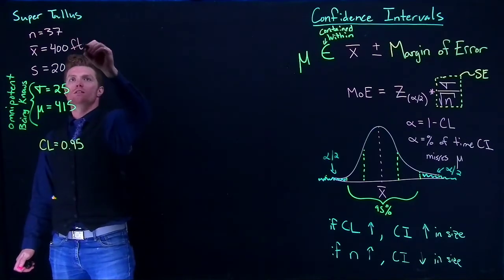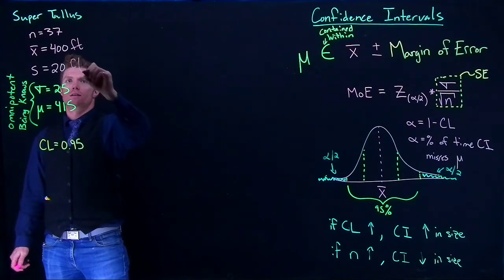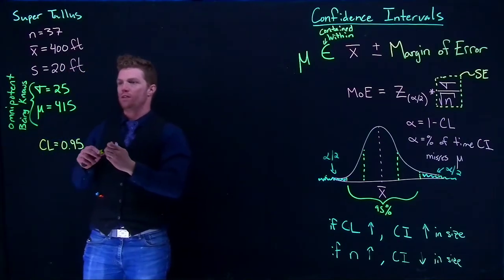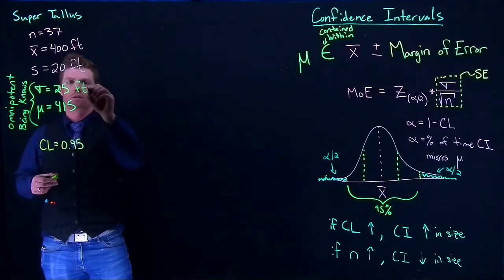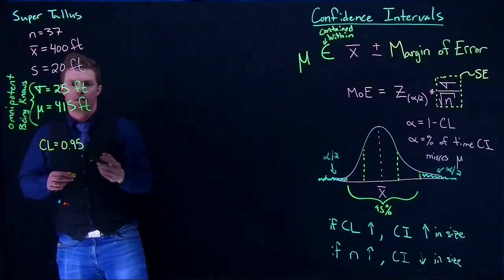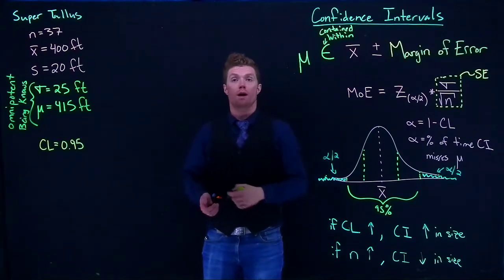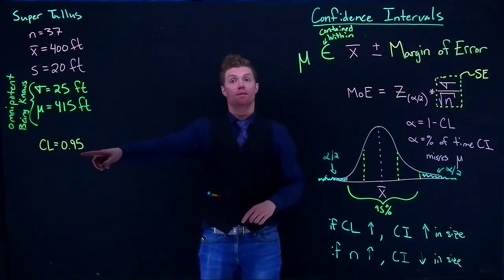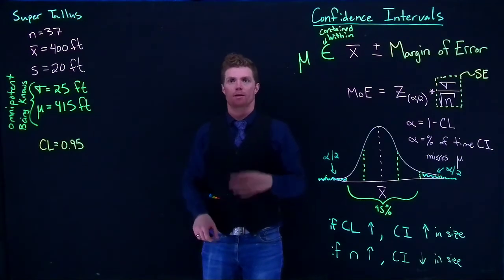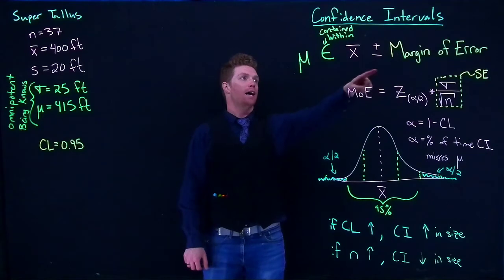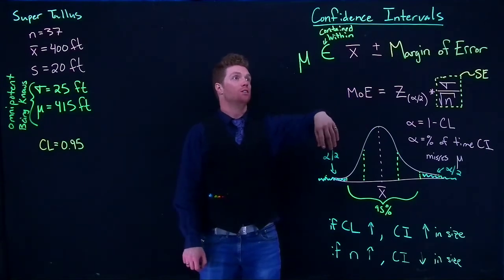Let's put that in there. Feet. Let's get some units up here. Feet. And we'll put feet and feet here too. Okay and suppose we are trying to approximate where the true population mean is. And we want to do it with a confidence level of 95%. Okay so we have the things that we need in order to calculate out our confidence interval.